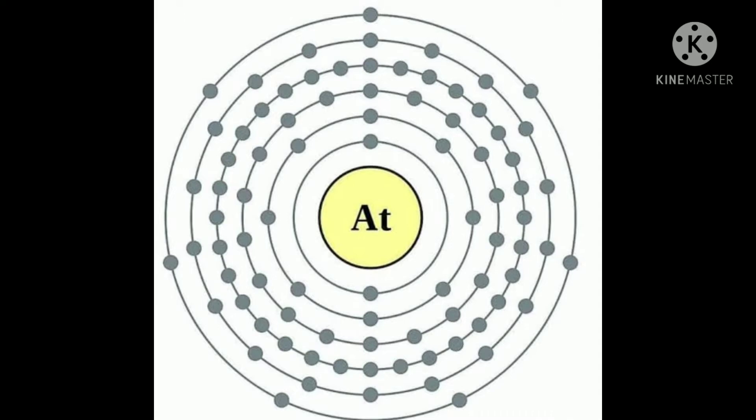The filling up of electrons in atomic orbitals is governed by three rules: Pauli's exclusion principle, Aufbau principle, and Hund's rule of maximum multiplicity. In this class we are discussing about these three rules.